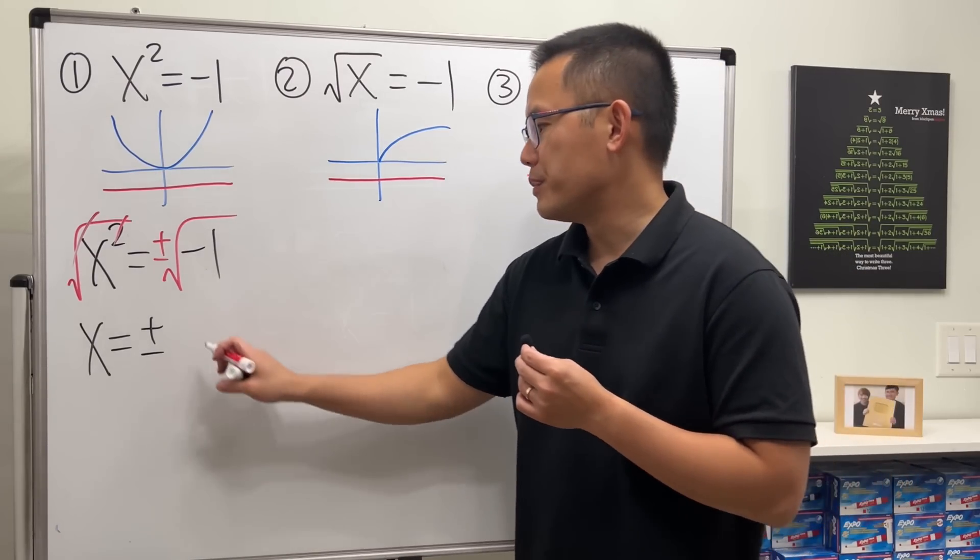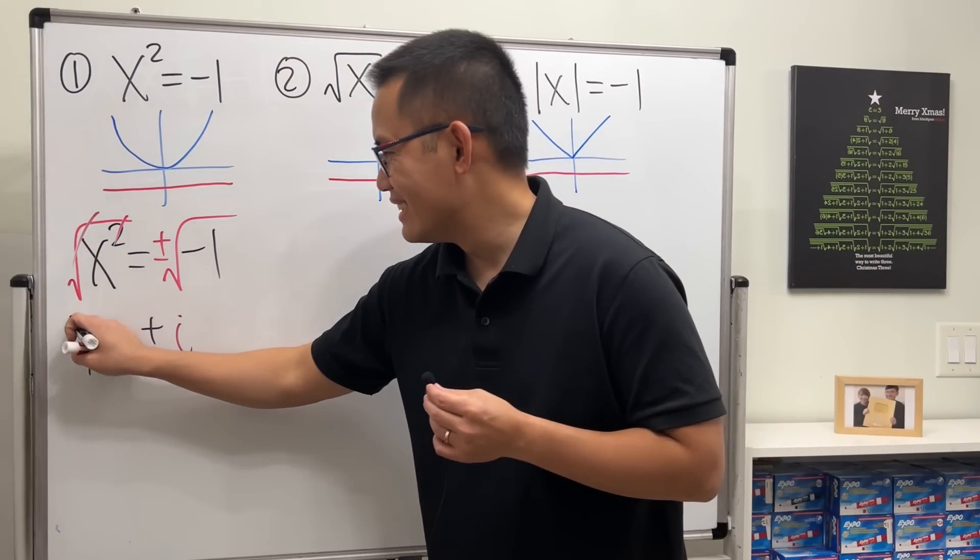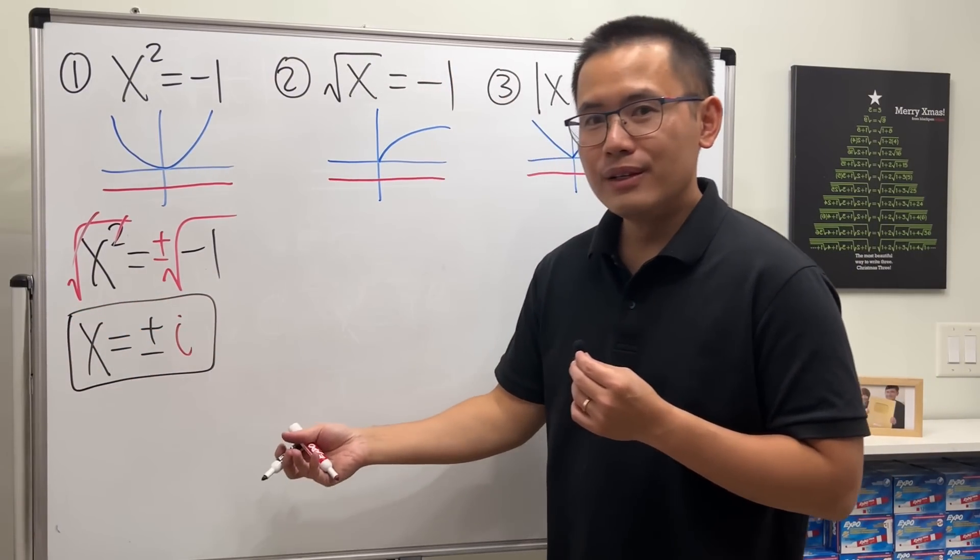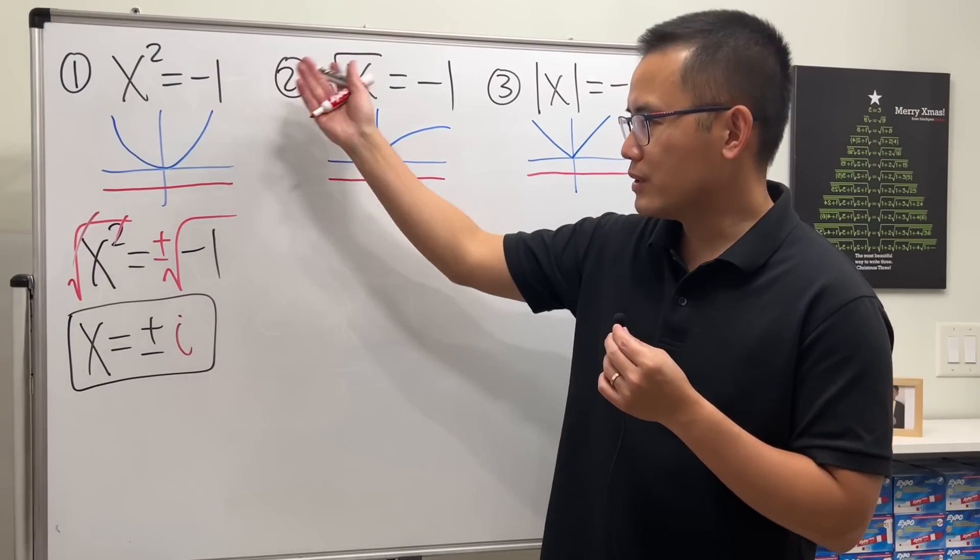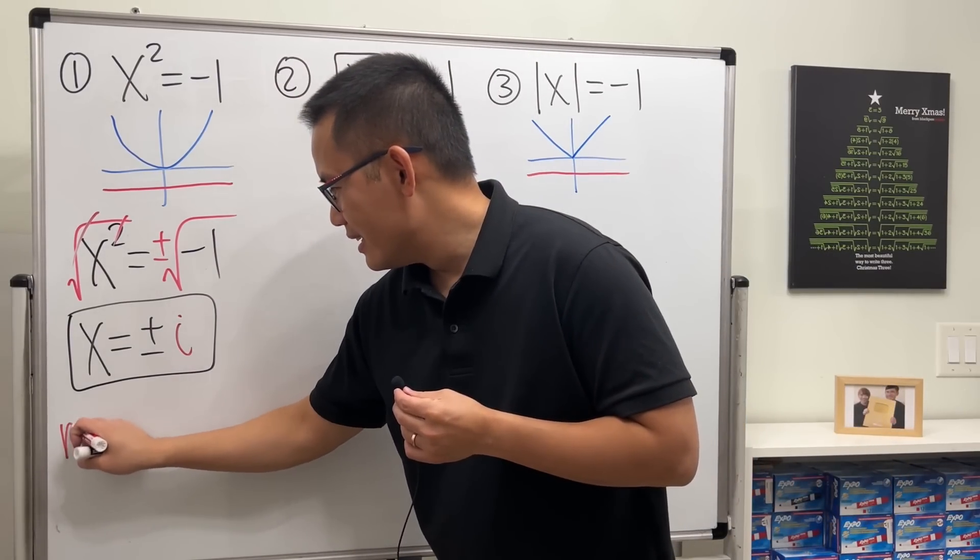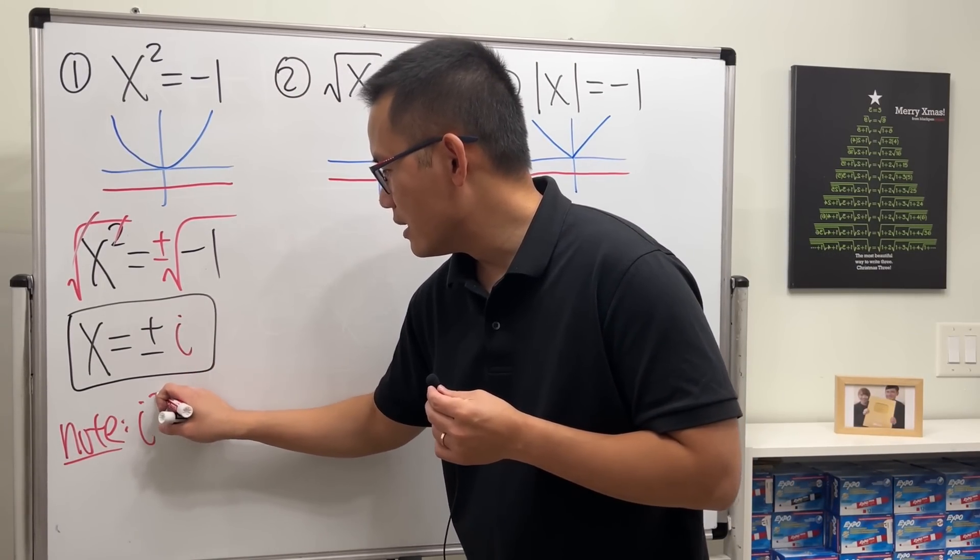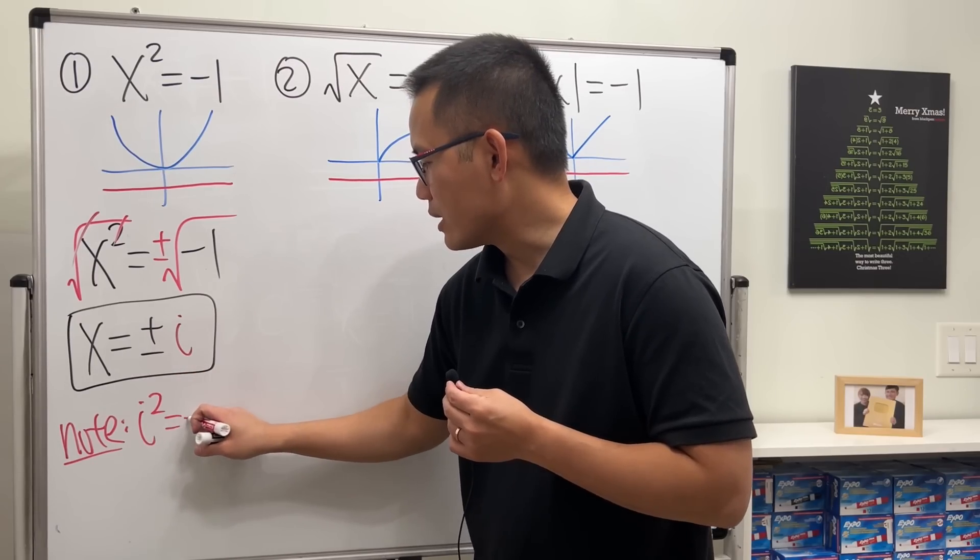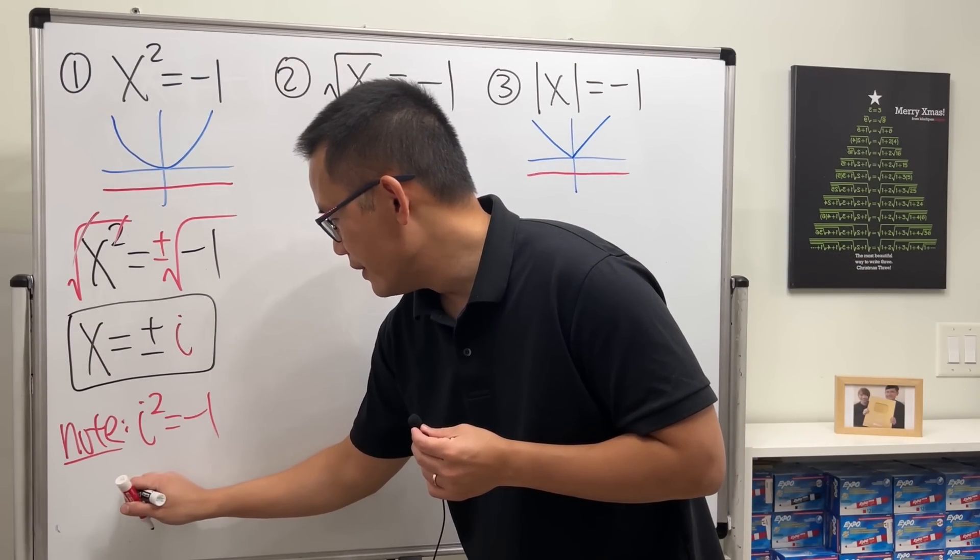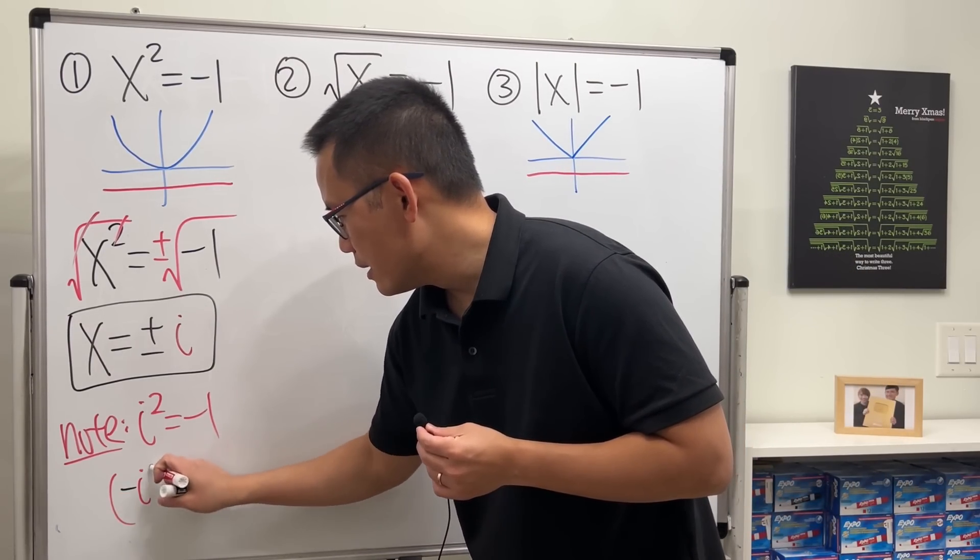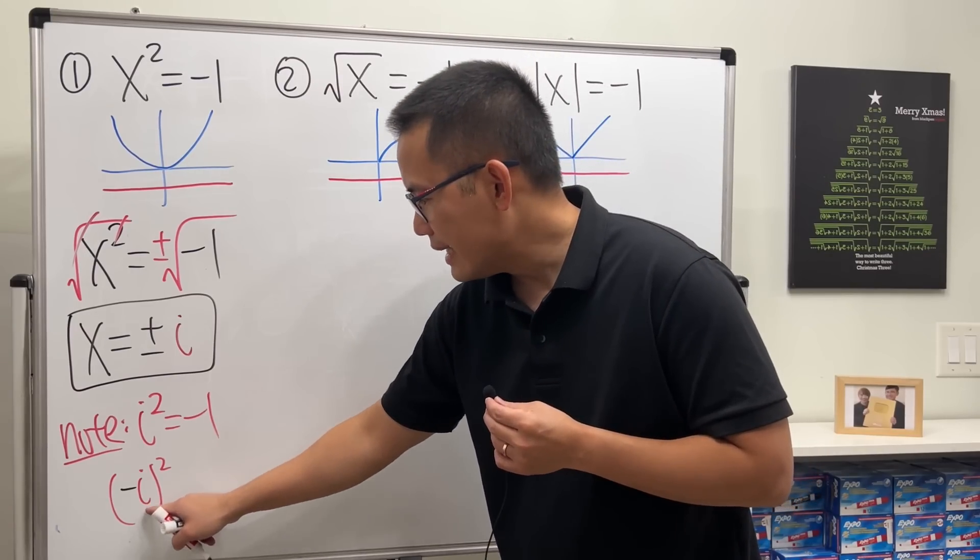This cancels and we just get x is equal to plus or minus square root of negative one, which is defined to be i, the imaginary unit. And we're done, so we can actually have the imaginary solution or the complex solution for this. Side note: i is defined to be i squared, that will give you negative one. And also if you have negative i, if you square that, negative squared is positive but i squared is negative one.